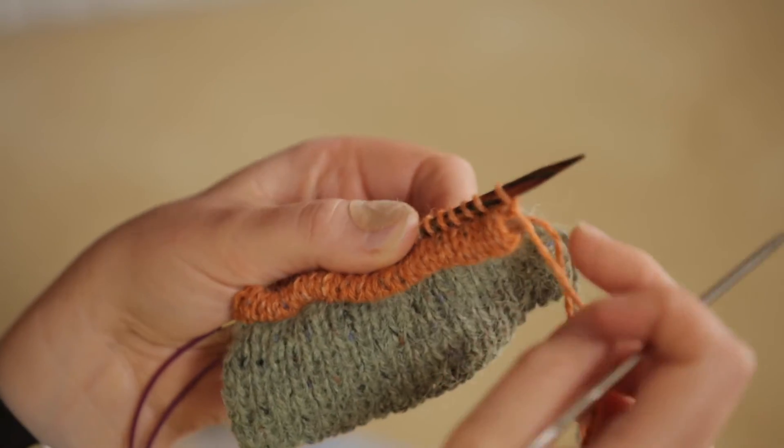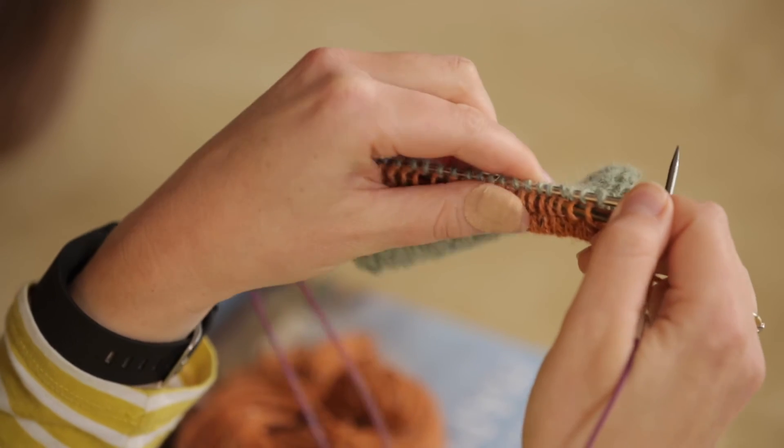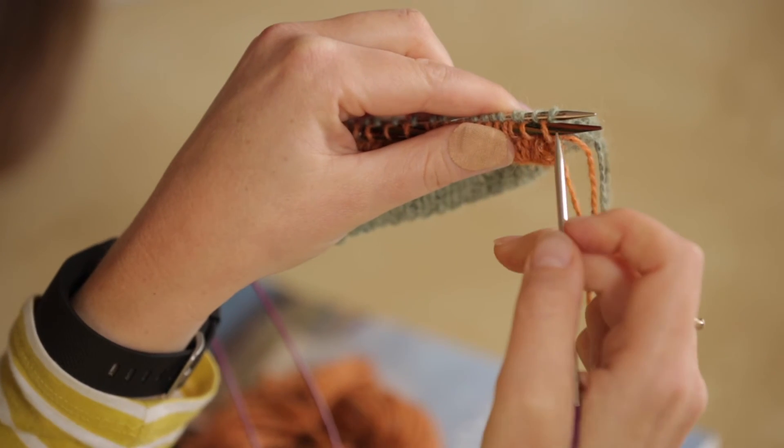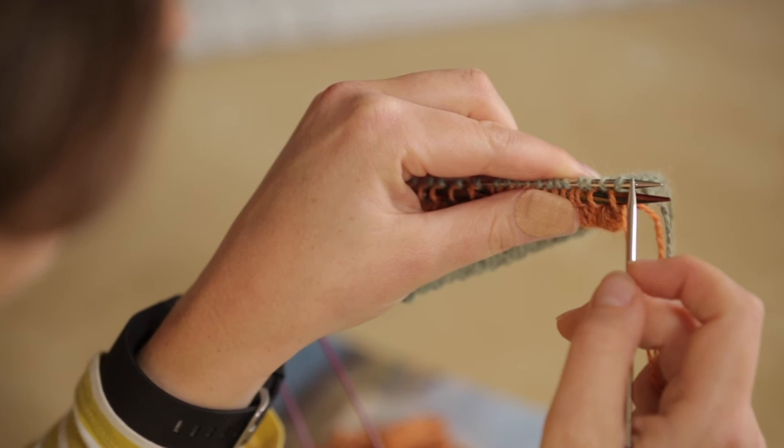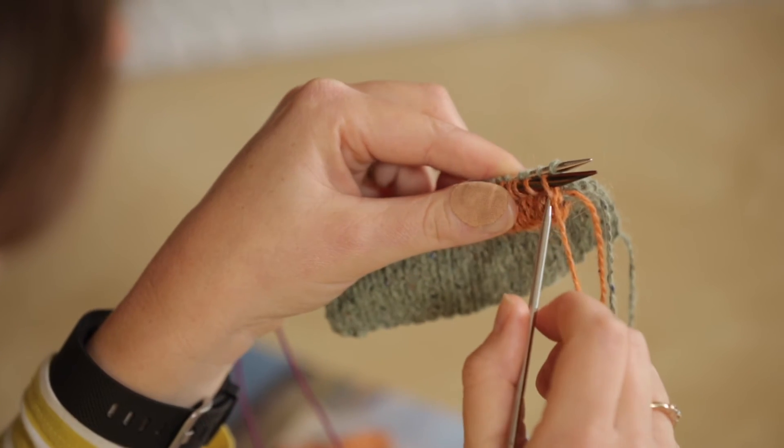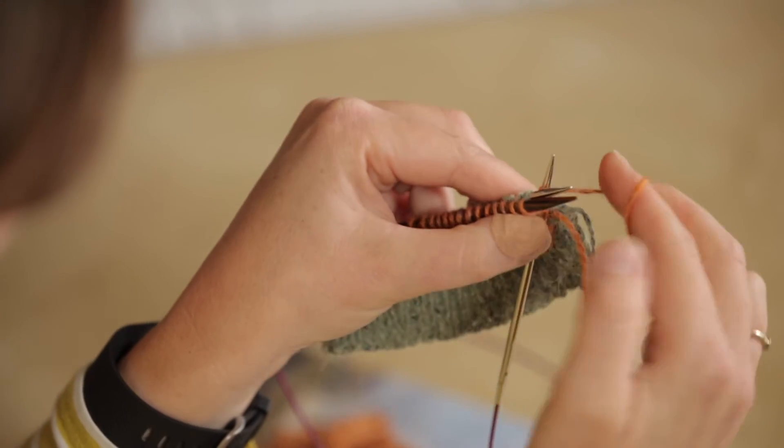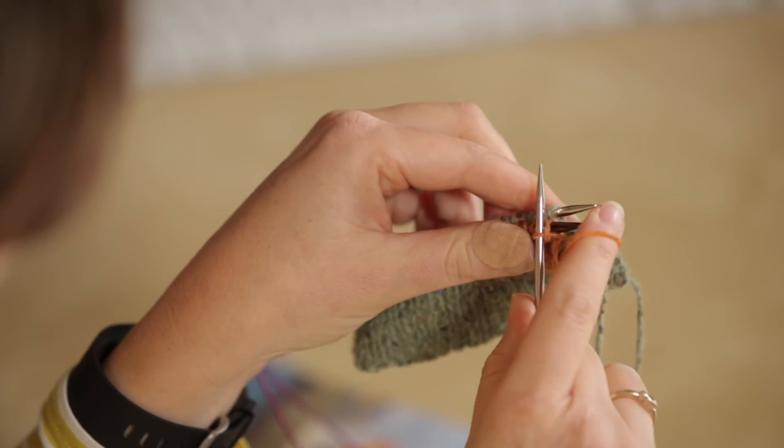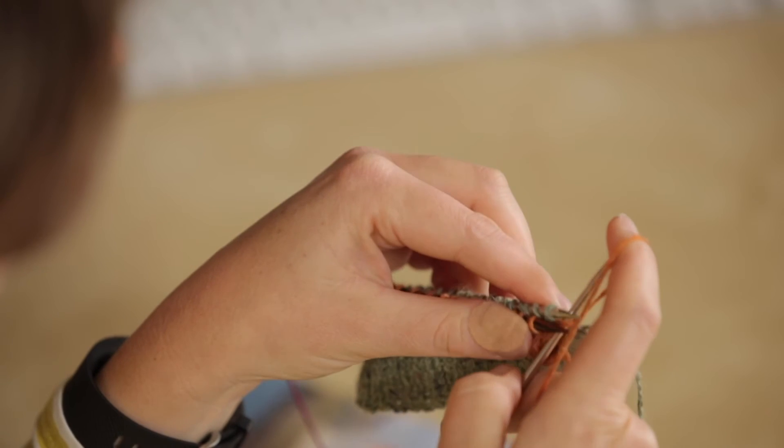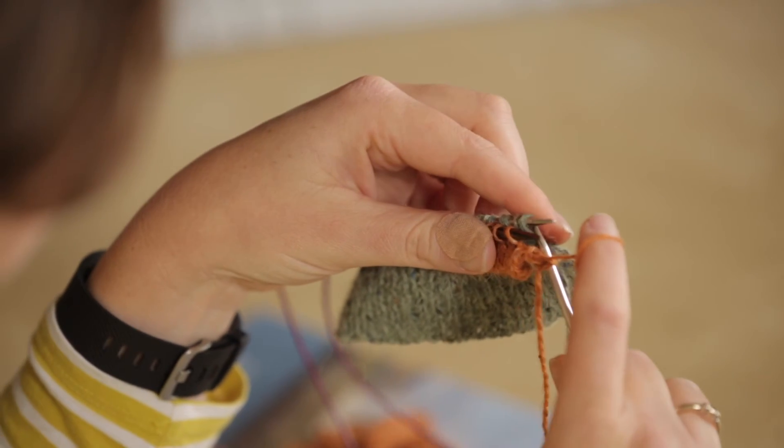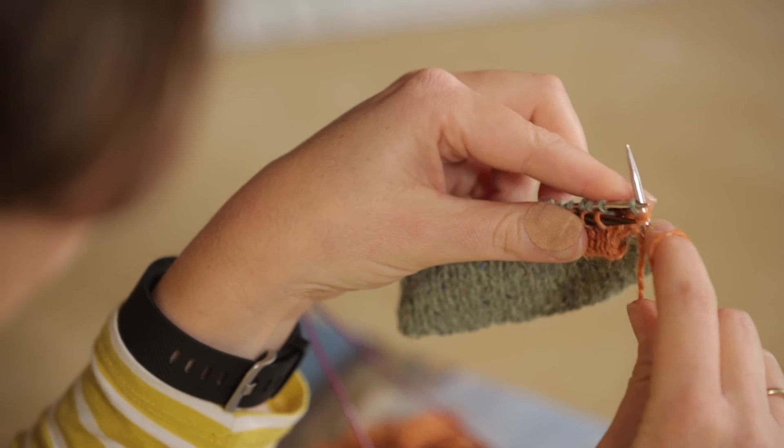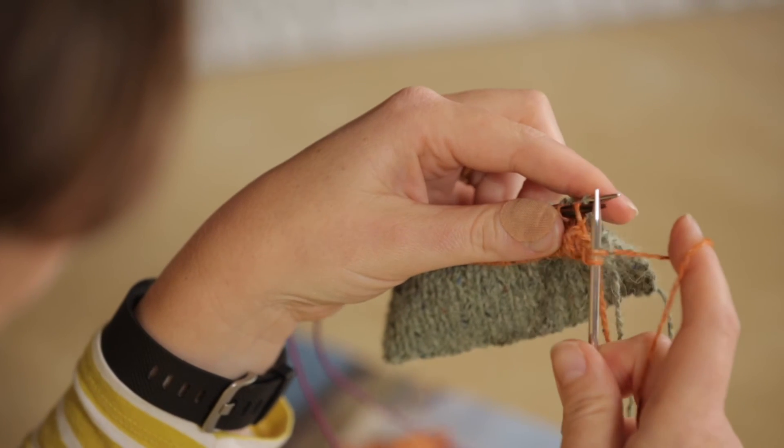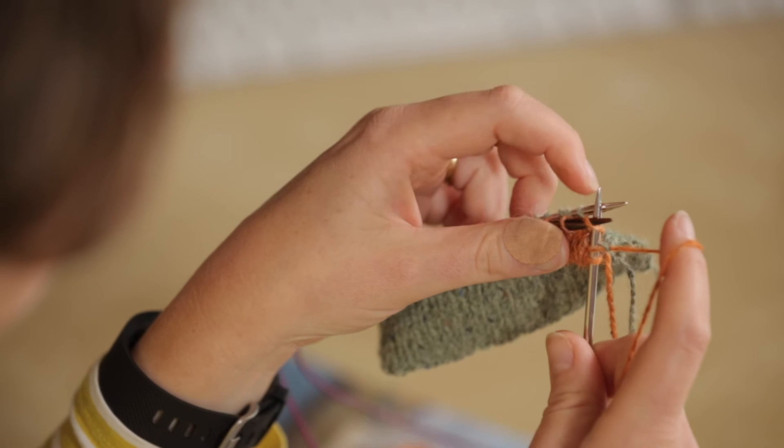We then work across the row alternating between the stitches on the front larger needle and the rear smaller needle. So we're going to knit the first stitch from the front needle, and then we're going to purl the first stitch on the back needle, keeping an eye on the stitches so they don't ping off the end.